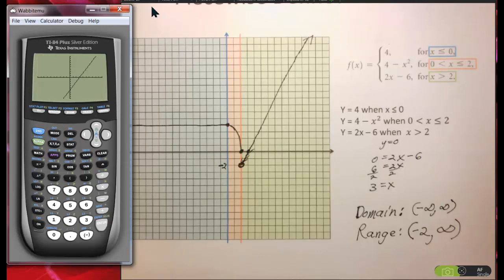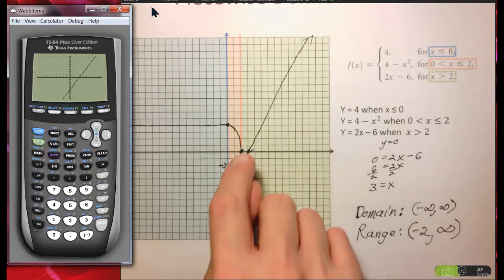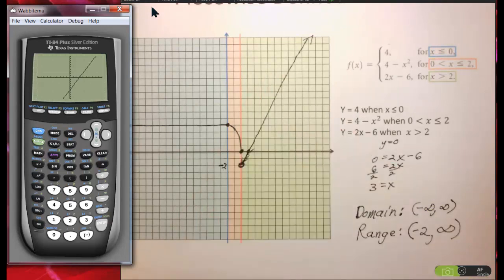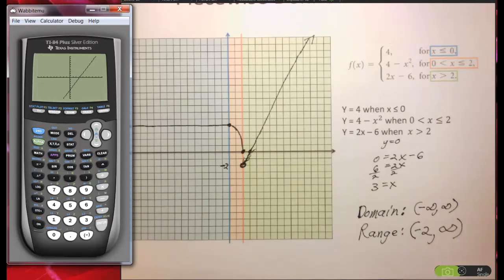And we've just graphed a piecewise function that has some closed circles, some open circles. And you can see now why we don't graph intervals with open circles, because we reserve our open and closed circles for piecewise defined functions. Talk to you later. I hope this helped.